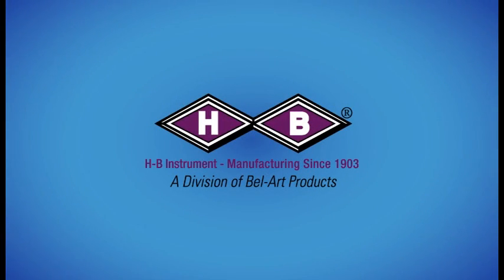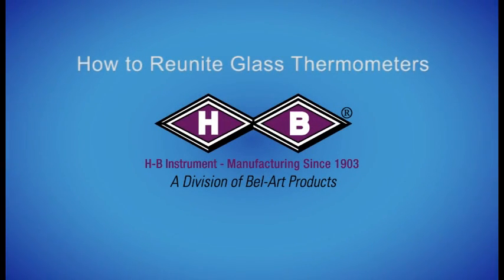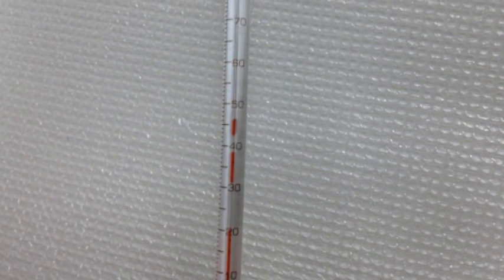The following is an instructional video from HB Instrument Company on how to reunite your glass thermometer. Separation in the liquid column can occur in shipping and handling or as a result of horizontal storage.